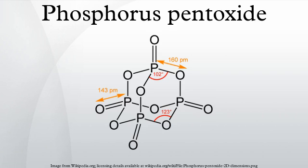Phosphorus pentoxide is a chemical compound with molecular formula P4O10. This white crystalline solid is the anhydride of phosphoric acid. It is a powerful desiccant and dehydrating agent.